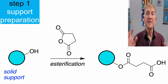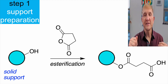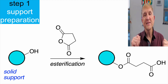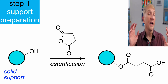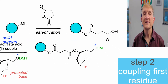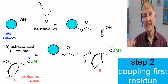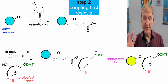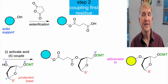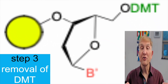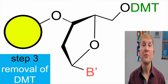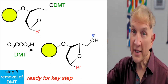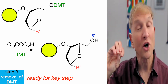In DNA synthesis, we attach the first nucleobase to the resin — typically a glass resin via an ester linkage, which later will be cleaved by aqueous ammonia. The first base is coupled to the 3' position, and the 5' OH is protected by a derivative of the trityl group, specifically dimethoxytrityl, DMT. That DMT group is acid sensitive; it's removed with a strong acid, typically trichloroacetic acid, to give the exposed 5' OH on the resin.